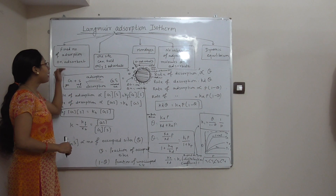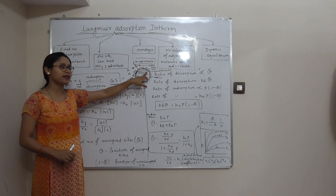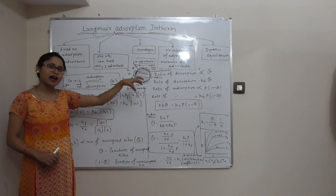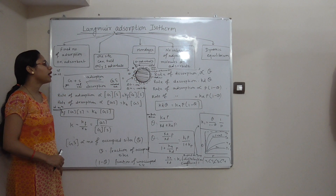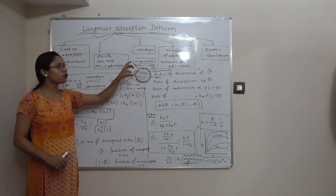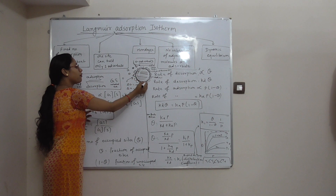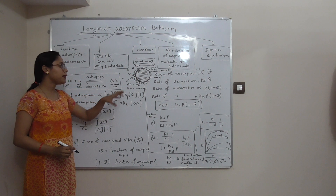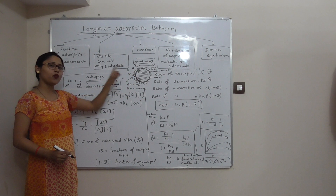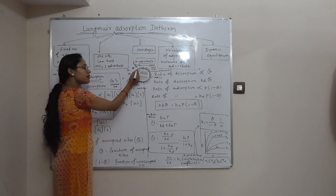The first postulate of Langmuir adsorption isotherm is that there are a fixed number of adsorption sites on the particular solid surface. One site can hold or accommodate only one adsorbate molecule at one time.